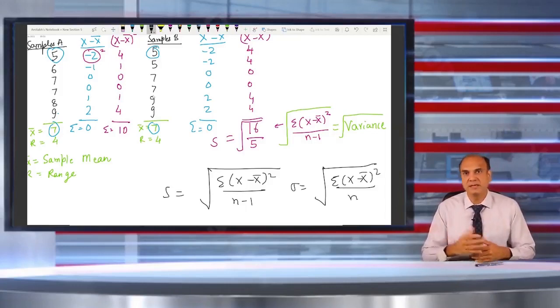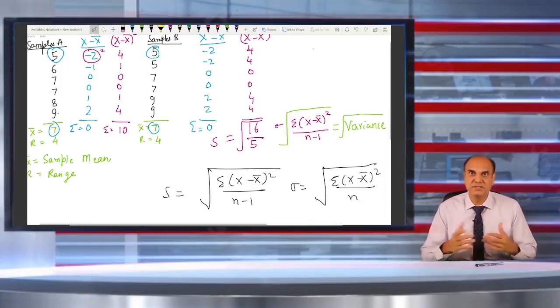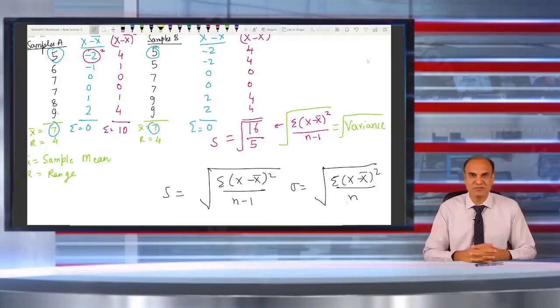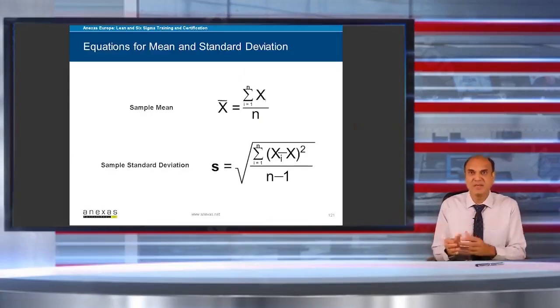then the standard deviation, that is sigma, would be square root of sum of squares of all the distances from the mean of all the data points divided by n. So that was your sample size formula. Now you don't have to really calculate so much. You have got Excel, you have got Minitab. In just one click you will get your standard deviation.